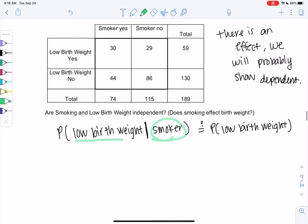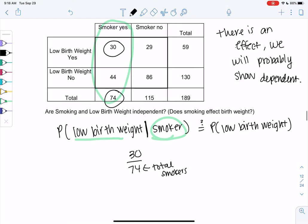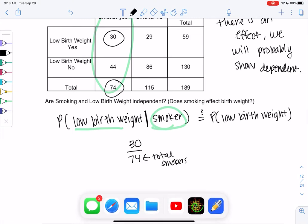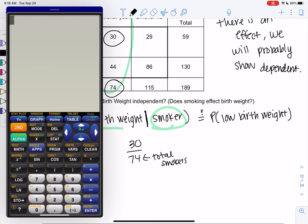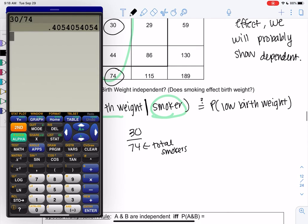Given smoker means we're going to look at the smoker column, since smoker is a column. And we're just going to go ahead and do low birth weight out of all the smokers. So it'll be 30 out of 74. Right, my total is smokers only. So we get, out of people who, women who smoke, pregnant women who smoke, 40%, 0.4054, had a low birth weight.